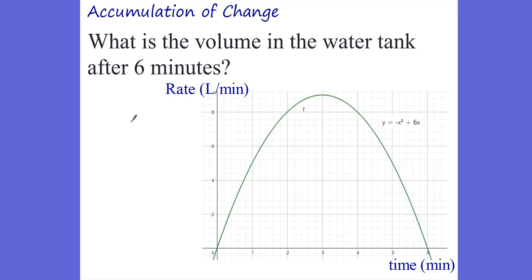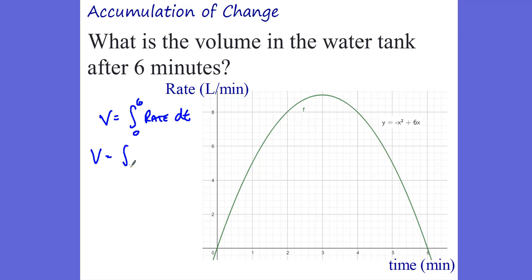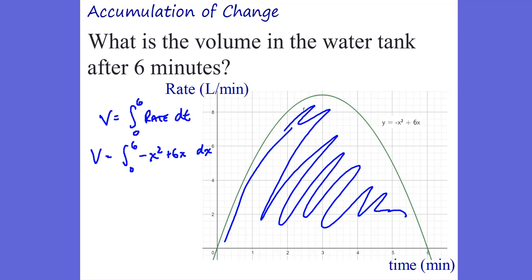What do we do if we have a curvy function? What's the volume in the water tank after 6 minutes? This is not as easy to find the area. The derivative would help us find the rate of the rate — the acceleration. So we need the integral. The volume equals the integral of the rate with respect to time from 0 to 6 minutes — those are called the limits of integration. So the volume equals the integral from 0 to 6 of negative x squared plus 6x, with respect to x.